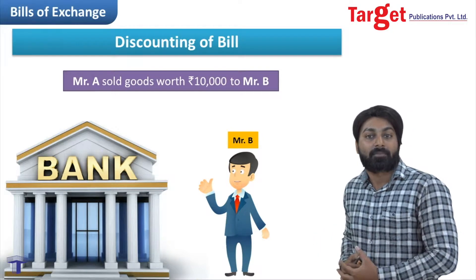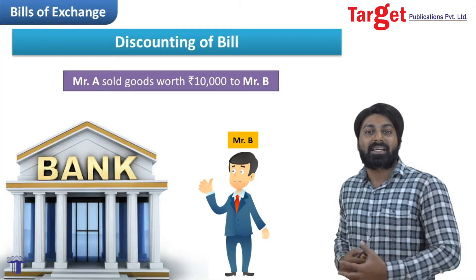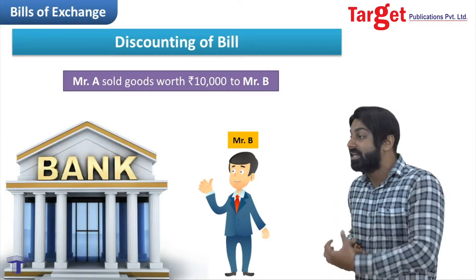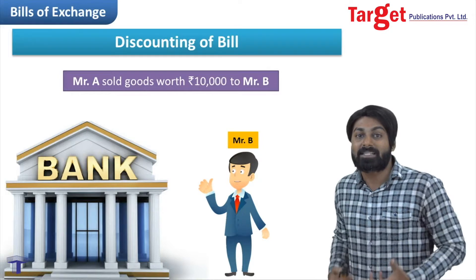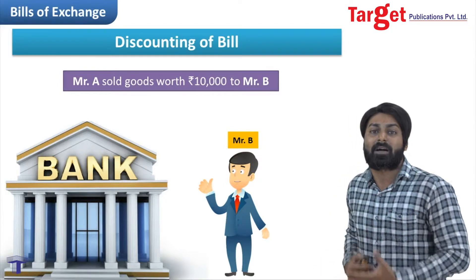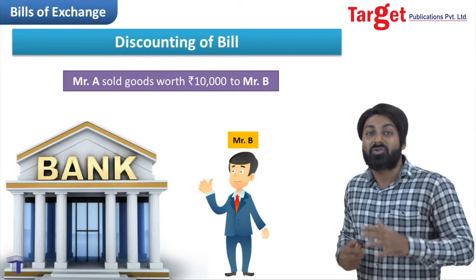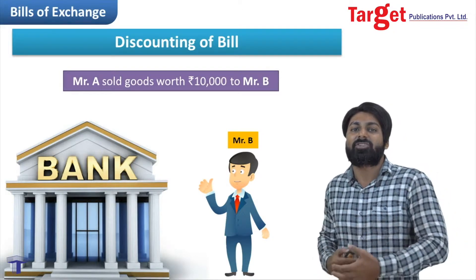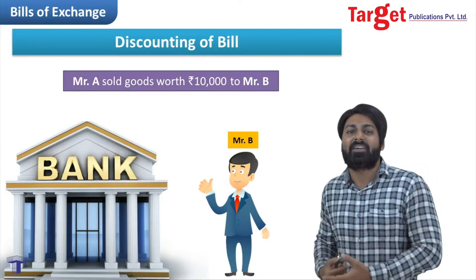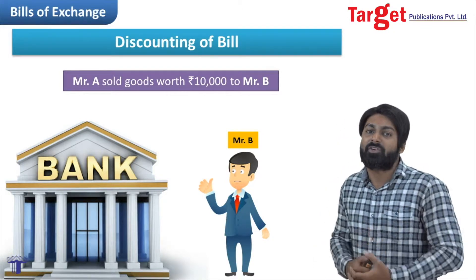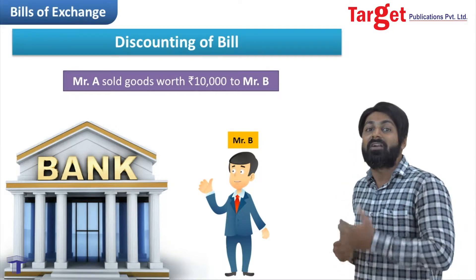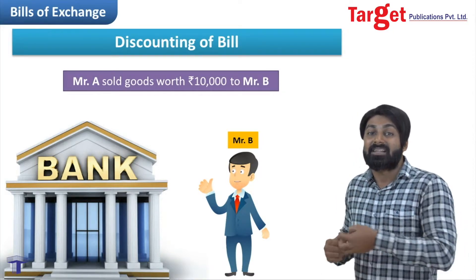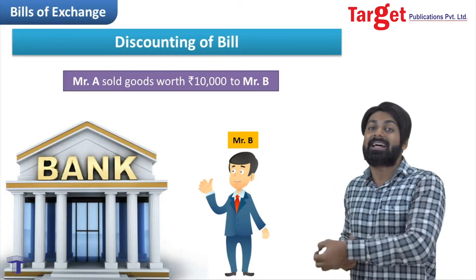There was a discount of 200 which the bank deducted — that is why it is called discounting of bill. The bank is not paying the entire amount to the drawer. Is this acceptable to the drawer? Yes, because he is in emergency need of cash. He got 200 rupees less, but his requirement was fulfilled. The bank will wait three months and receive the entire 10,000 from the drawee.